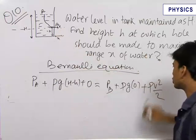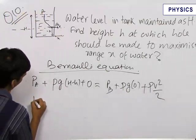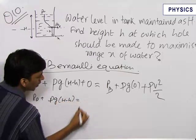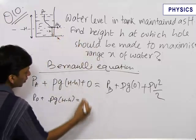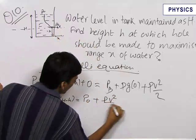Now, P_A equals atmospheric pressure P₀. So P₀ + ρg(H - h) equals P_B, which is also atmospheric pressure P₀, plus ρV²/2.